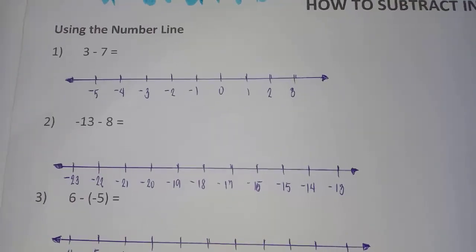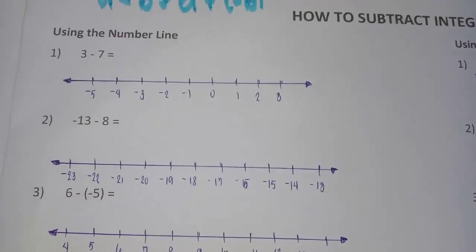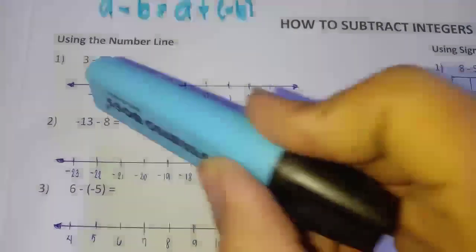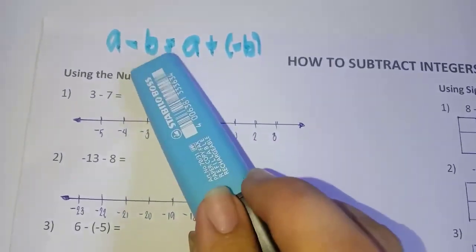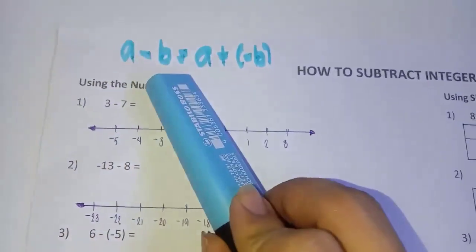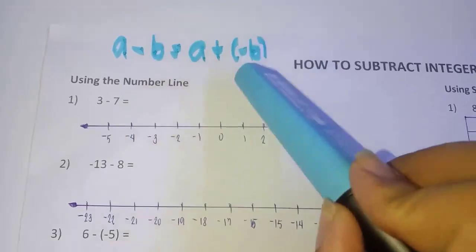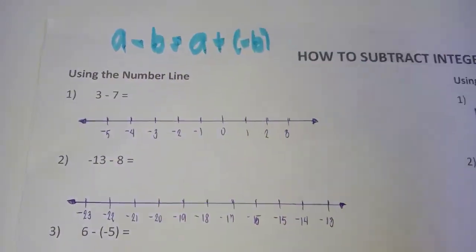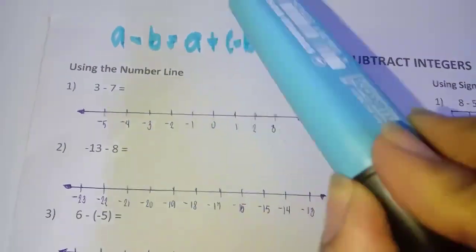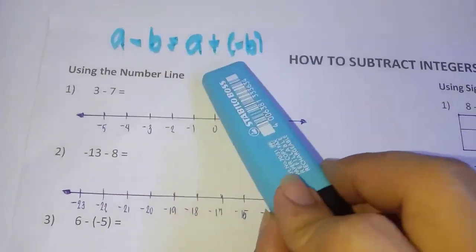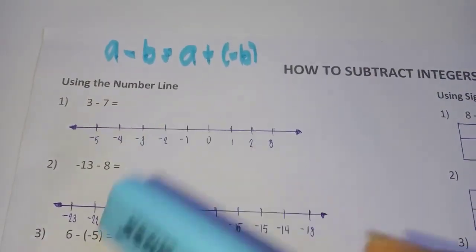Let's begin with the first method: using the number line to subtract integers. The steps are: first, express the subtraction problem as an addition problem — so a minus b becomes a plus negative b. Second, apply the steps for adding integers using the number line. For those unfamiliar, please watch Topic 13: how to add integers.